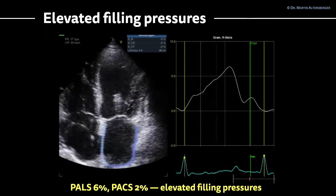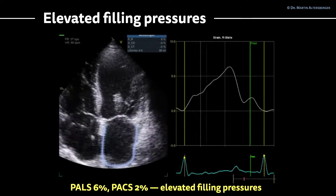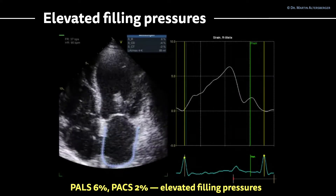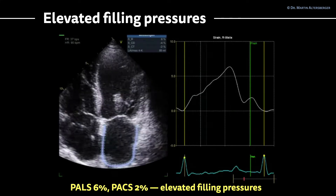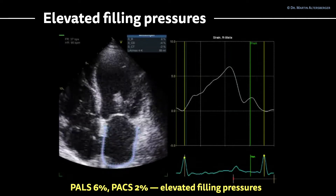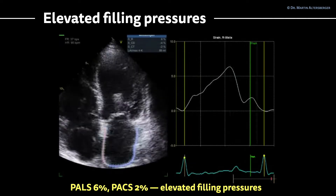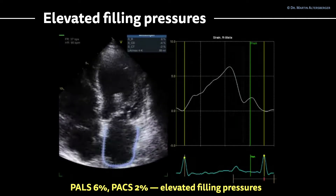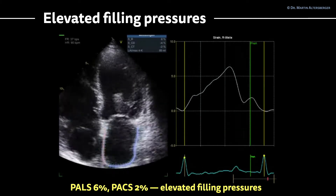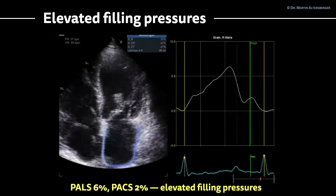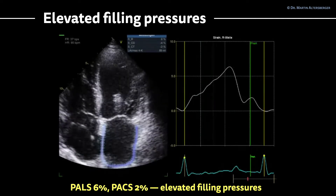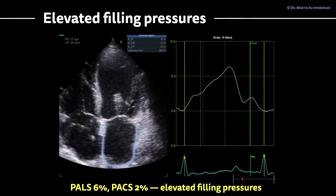On the other hand, we have a patient with elevated filling pressures. You do see also a severely reduced left ventricular ejection fraction. The patient also had a severely reduced global longitudinal strain on LV strain imaging. We can identify initially that the curve entirely looks different compared to the previous images, or the patients with most likely no elevated filling pressures. In this case, we have a severely reduced PALS of only 6% and a PaX of only 2%. There are definitely elevated filling pressures.